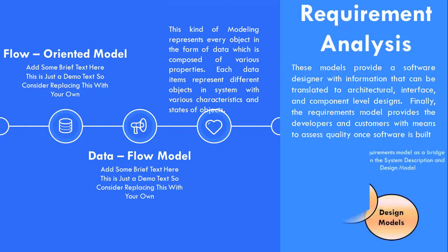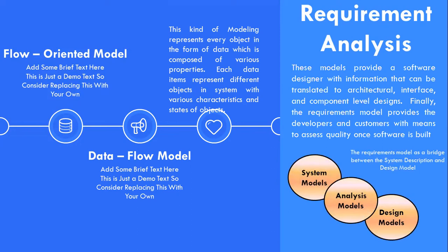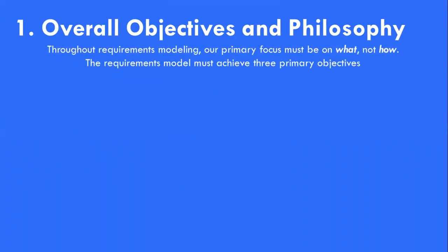The requirement model provides developers and customers with the means to assess quality once the software is being built. Throughout requirements modeling, the primary focus is on 'what' and not on 'how': what user interactions occur in particular circumstances, what objects the system manipulates, what functions the system must perform, what behavior the system exhibits, and what interfaces are defined and what conventions are applied.